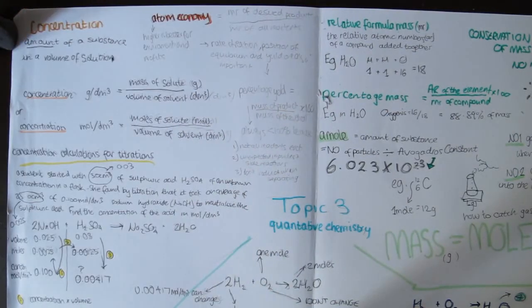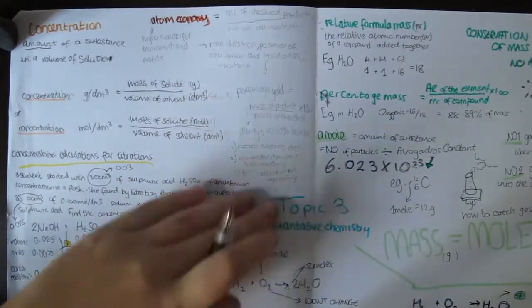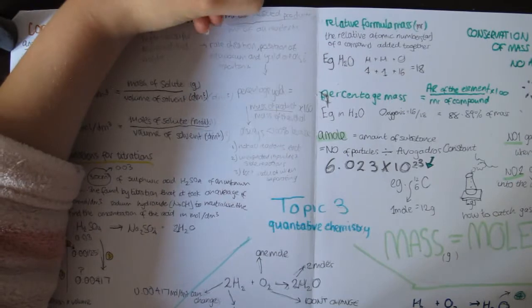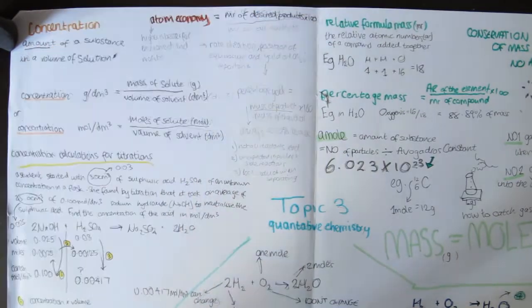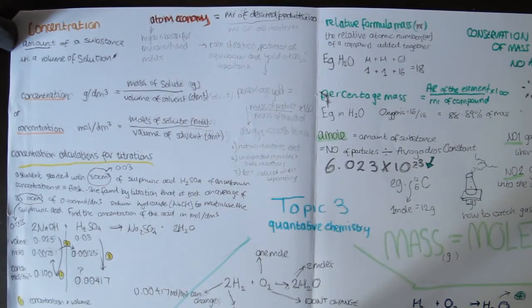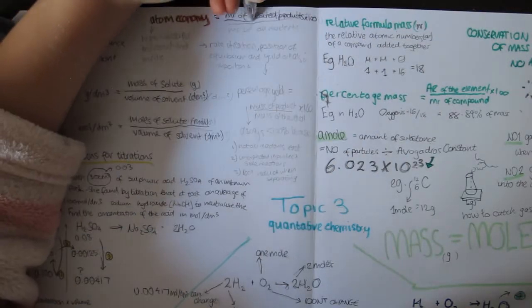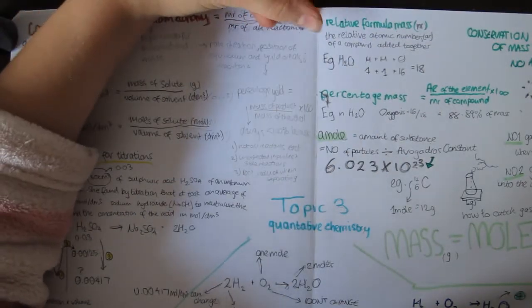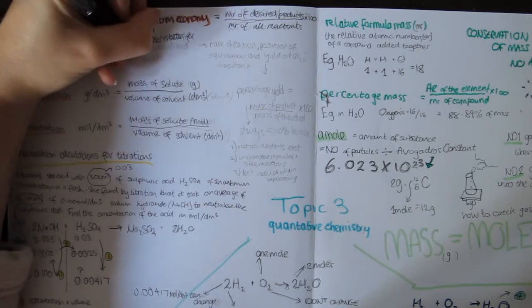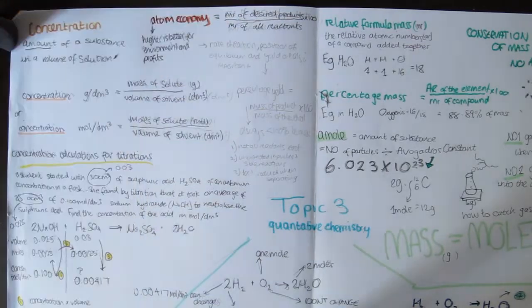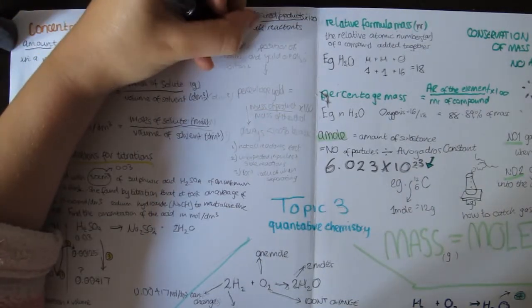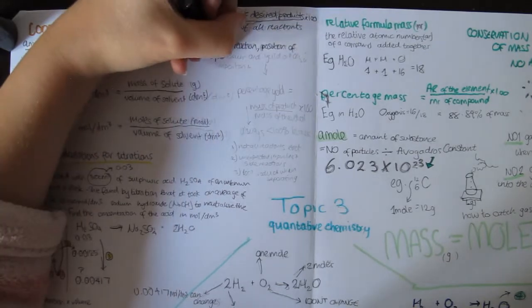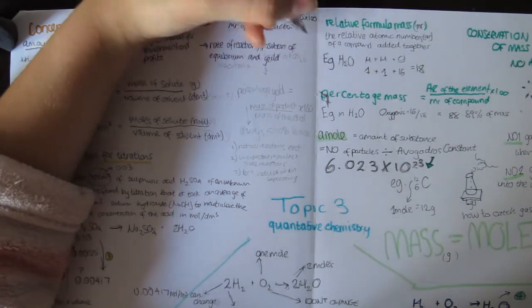Atom economy is better for the environment because less non-renewable materials are used up and less waste is produced, which also increases profits. Furthermore, waste could be produced less by having useful by-products. Although having only one product is still preferable for making the process more efficient. Other factors for choosing reactions include yield, rate of reaction, and position of equilibrium.